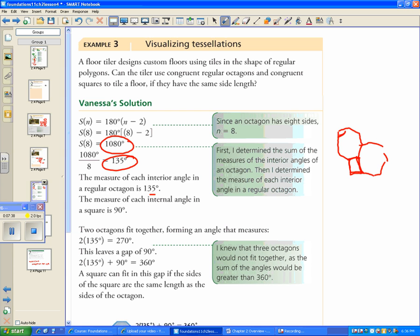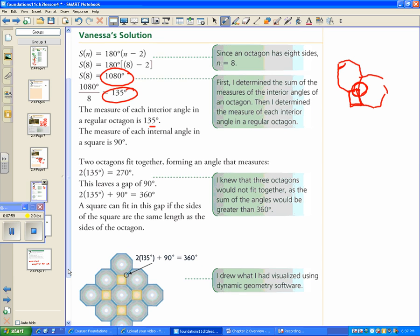The measure of each internal angle of a square is 90. So is there some way that I can fit together 90 and 135 with no gaps? Well in order for there to be no gaps, we need to somehow add up those angles to get 360. She's saying, I can fit two octagons together, forming an angle that measures 270. She saw that 360 minus 270 leaves a gap of 90 degrees. And that's exactly the size of a single angle in that regular square. So a square can fit in this gap if the sides are the same length as the octagon.